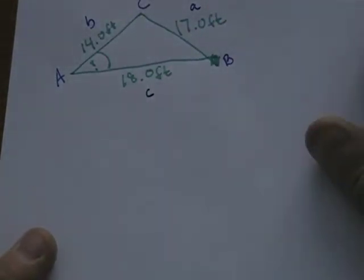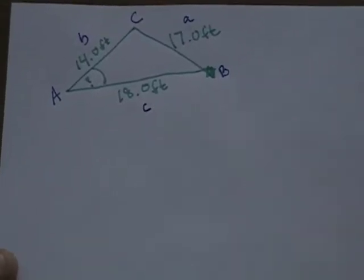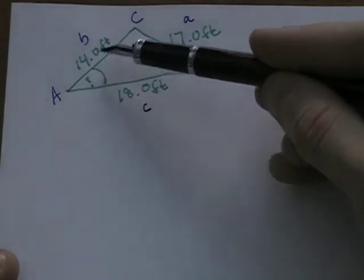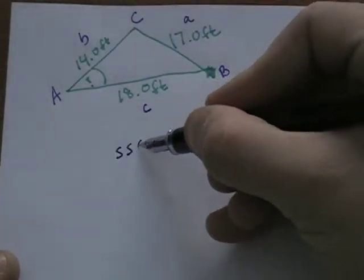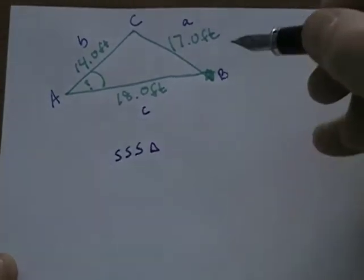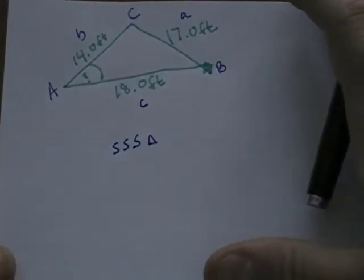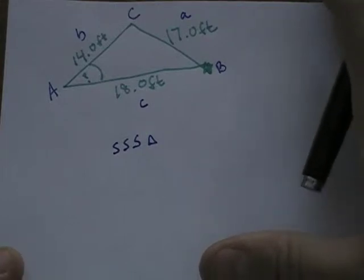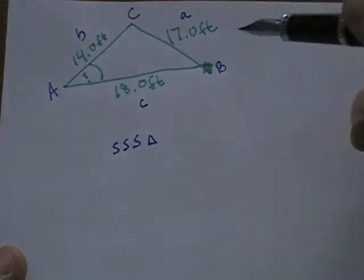The first thing you have to do is identify what type of triangle we have here. And because we were given all three sides, this is a side, side, side triangle. A side, side, side triangle means you have to use the law of cosines to solve for any unknowns. In this case, we've been asked to find angle A.